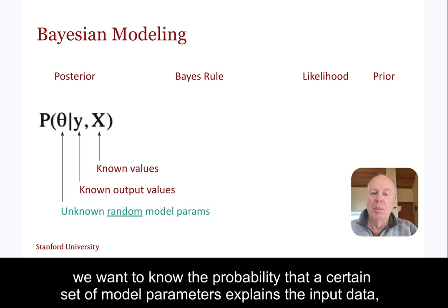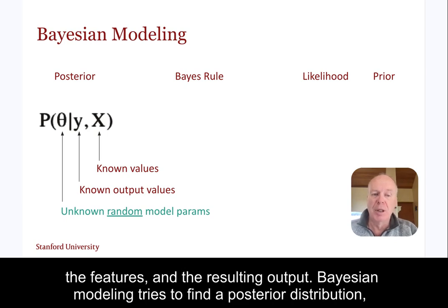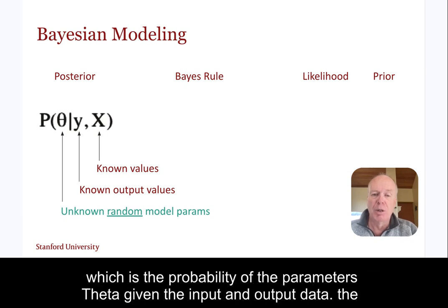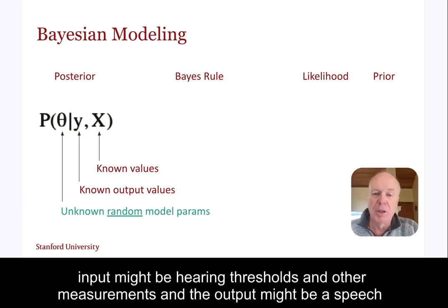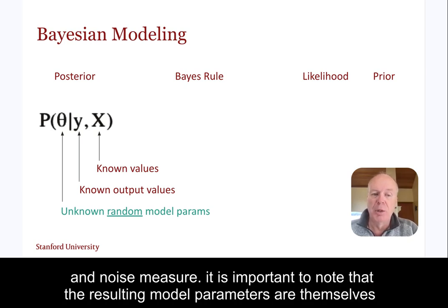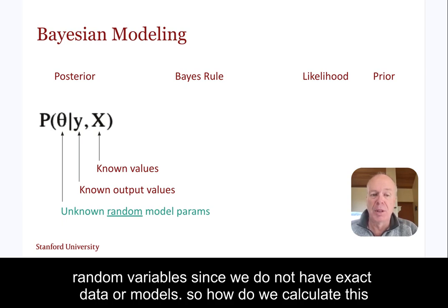We want to know the probability that a certain set of model parameters explains the input data — the features — and the resulting output. Bayesian modeling tries to find a posterior distribution, which is the probability of the parameters theta given the input and output data. The input might be hearing thresholds and other measurements, and the output might be a speech and noise measure. It is important to note that the resulting model parameters are themselves random variables, since we do not have exact data or models.